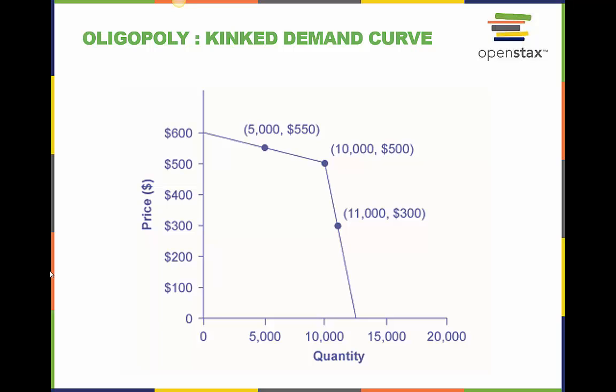Consider a member firm in an oligopoly cartel that is supposed to produce a quantity of 10,000 and sell at a price of 500. The other members of the cartel can encourage this firm to honor its commitments by acting so that the firm faces a kinked demand curve. If the oligopolist attempts to expand output and reduce price slightly, other firms also cut prices immediately. So if the firm expands output to 11,000, the price per unit falls dramatically to 300.